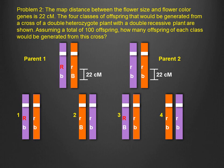In the second problem, we are given the map distance between two genes on the same chromosome. We're also given the genotypes of the four classes of offspring that result from crossing a double heterozygote individual with a double recessive individual. Our task is to determine the number of offspring of each class that would arise from this cross.